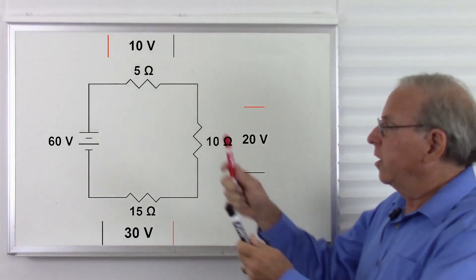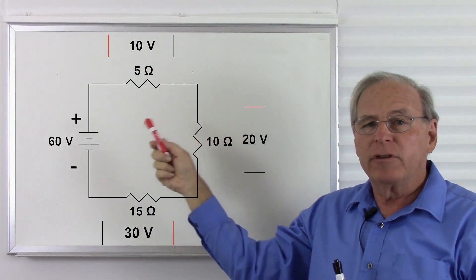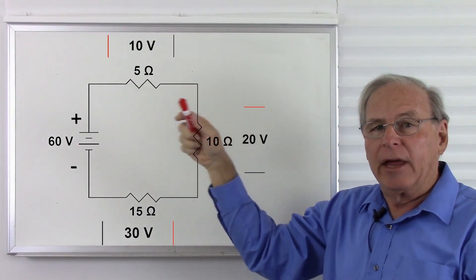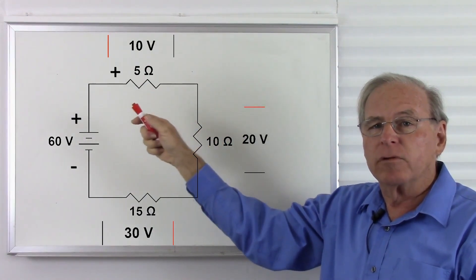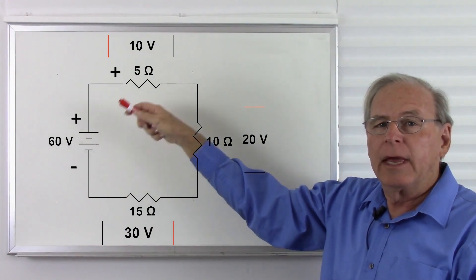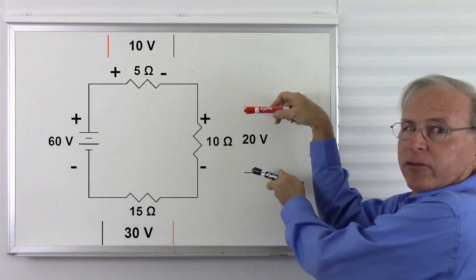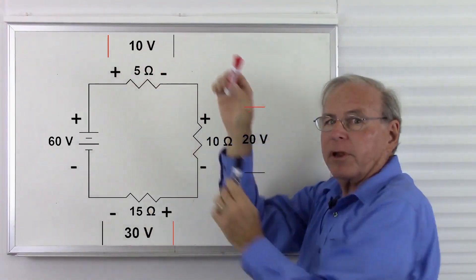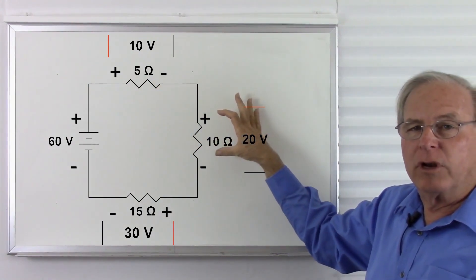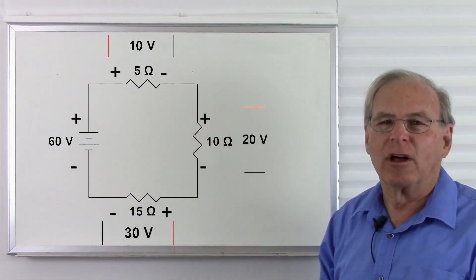Notice the polarities of the voltages. For the 60 volt battery, positive voltage is where the conventional current exits the source. But when current flows into a resistor, we get a backup of voltage, so we get positive voltage where the current enters the resistance. So: positive voltage where current exits a voltage source; positive voltage where it enters a current consumer. The polarities of the voltages across the resistors are reversed compared to the polarity of the battery — giving us positive 60 volts, negative 10 volts, negative 20 volts, negative 30 volts, which all add to zero.